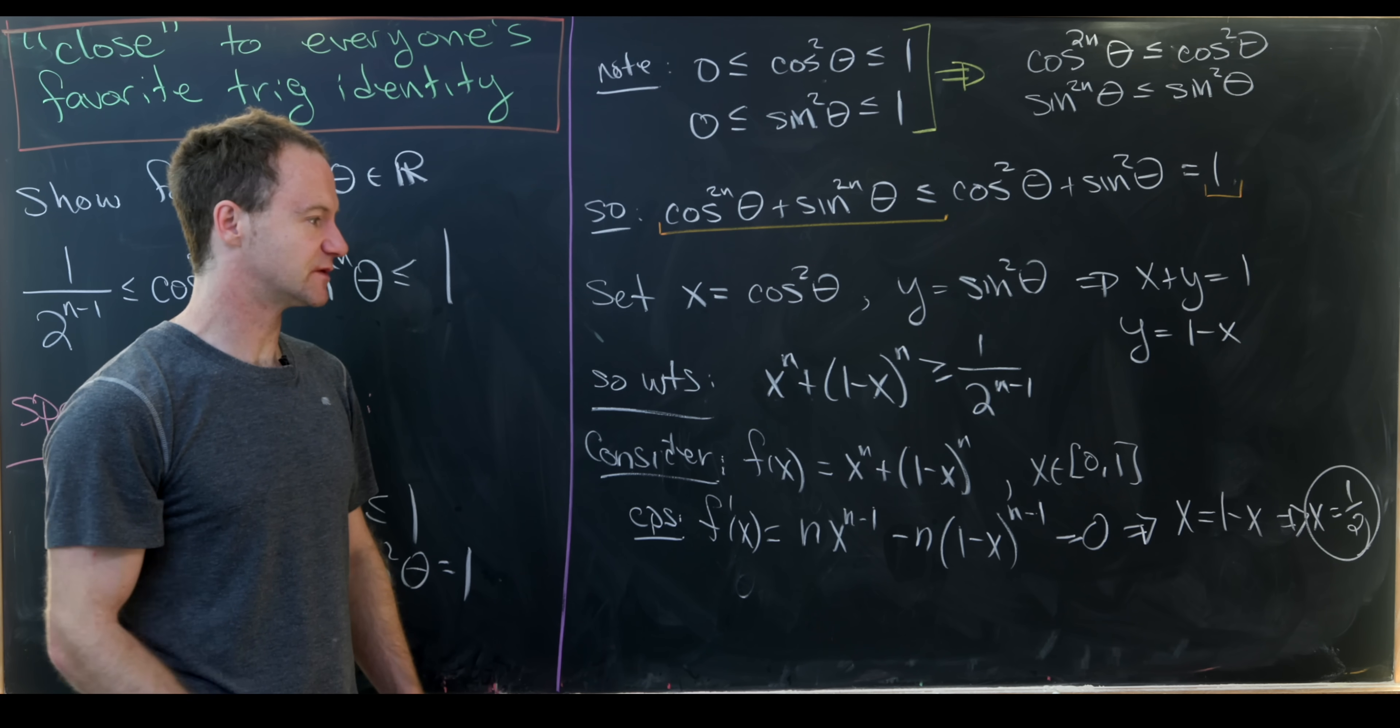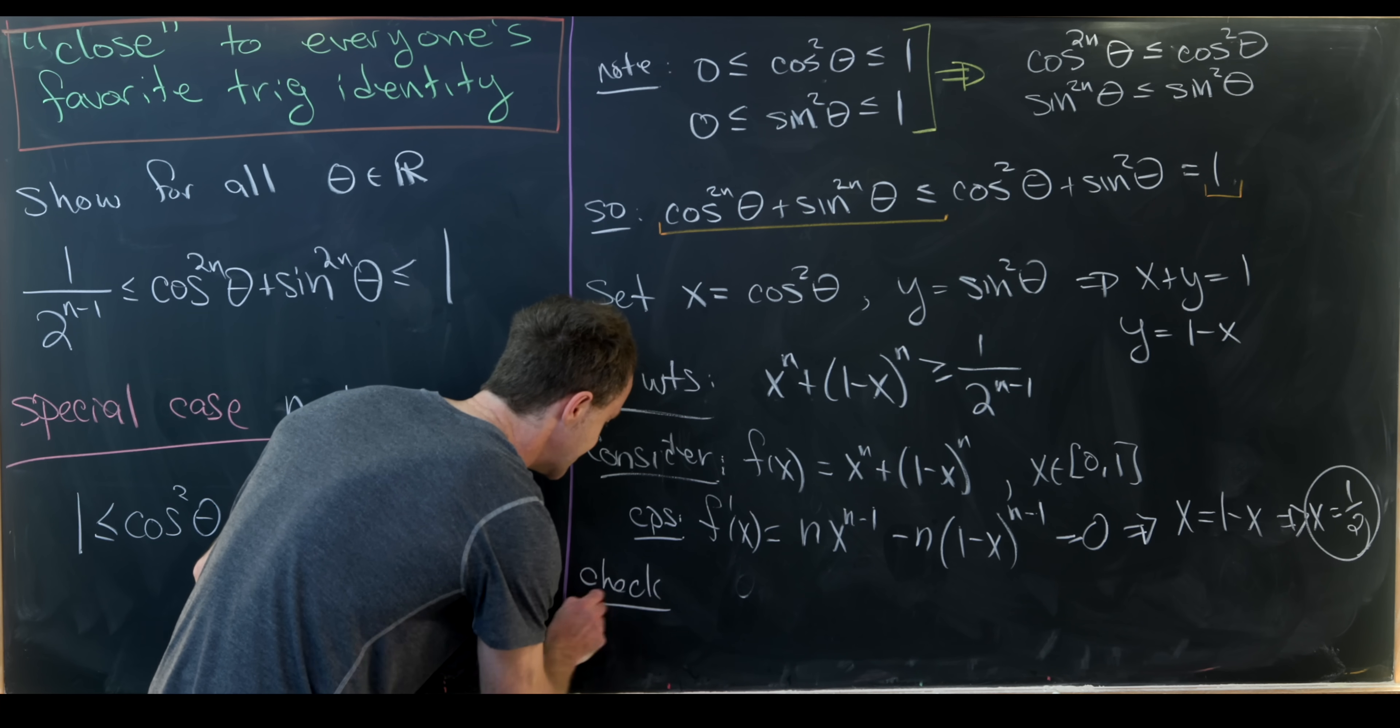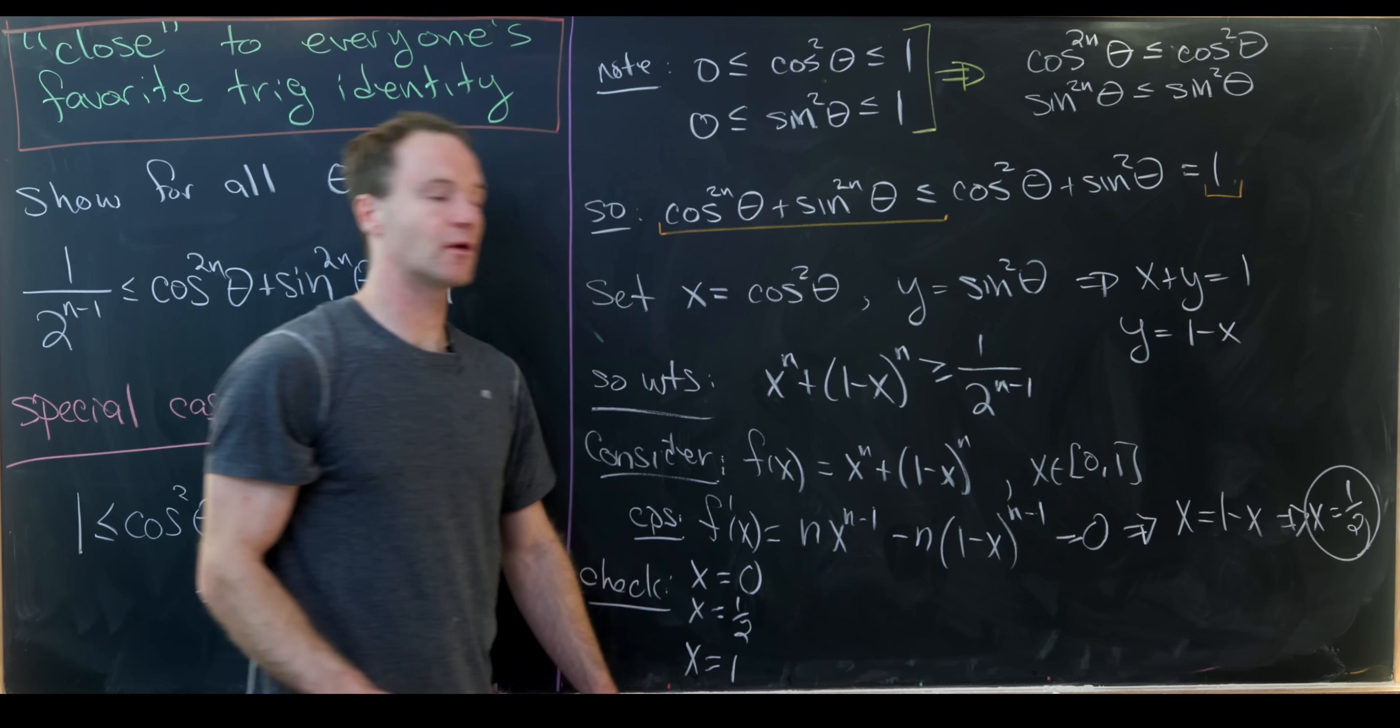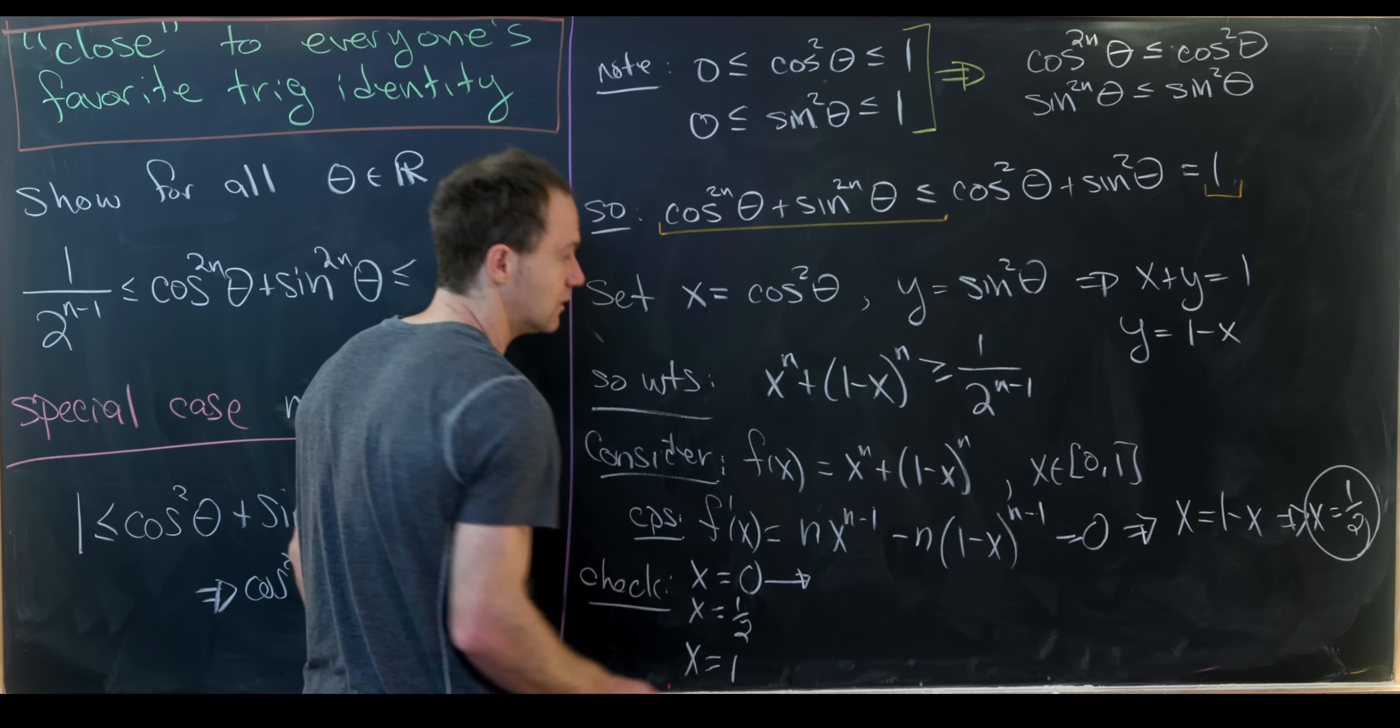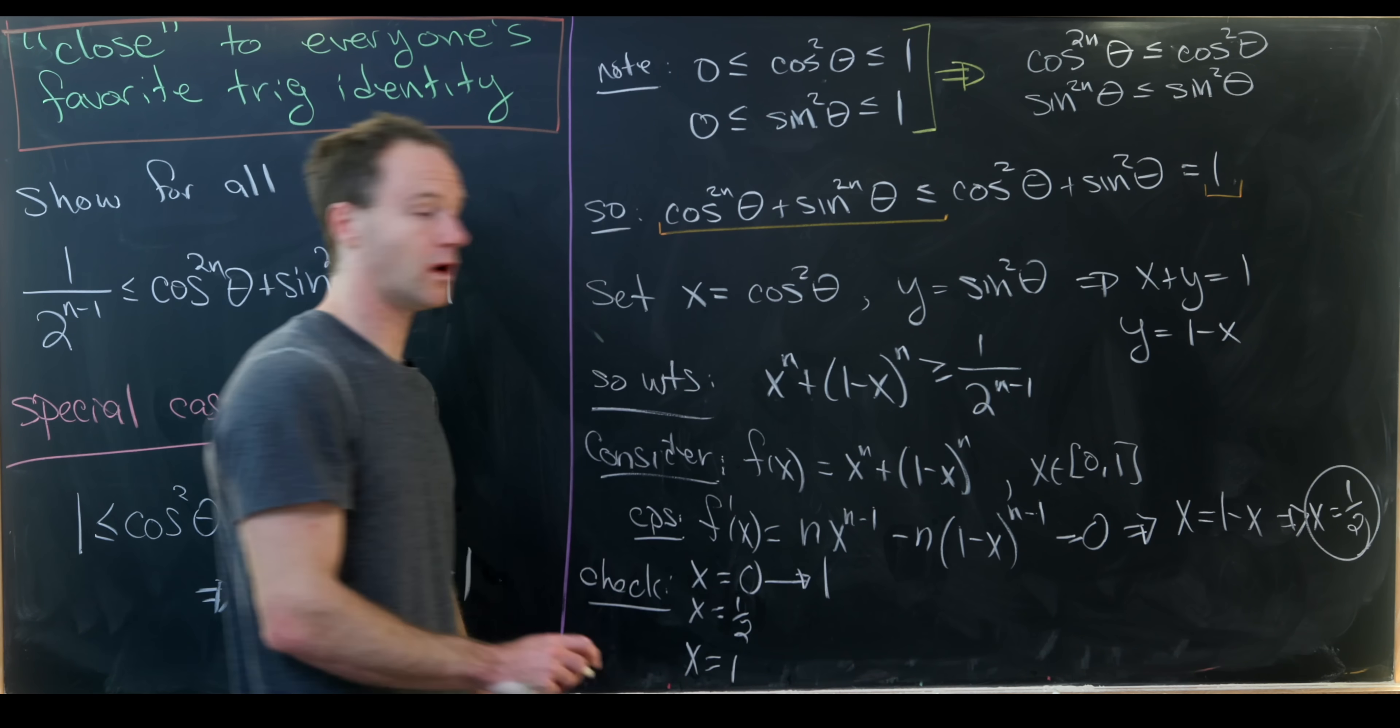Okay, so we get x equals 1 half. So that means we only need to check three values: x equals 0, x equals 1, and x equals 1 half in order to find maximums and minimums here. So let's see. x equals 0 will give us f of 0, which in this case is 1 to the n, so that's 1.